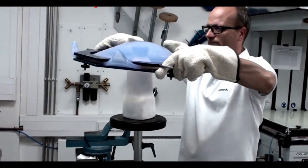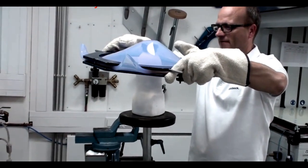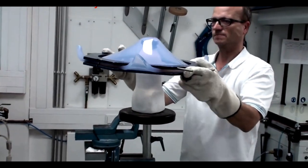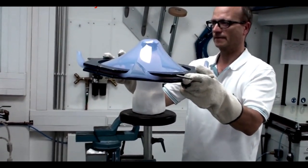In order to thermoform the check socket, use 12mm thick thermoplastic and blister form as you normally would.